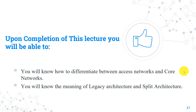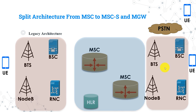Let's first talk about the legacy architecture, or as some people call it, monolithic architecture — both names are correct. In the legacy architecture networks, we have two important parts, which are the access part and the core part.